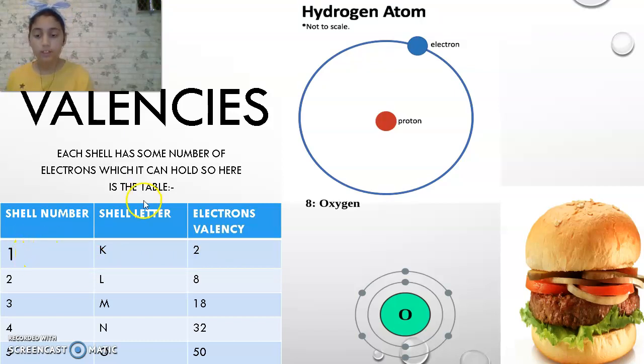Shell number one, shell letter K, electron valency is two. Shell number two, shell letter L, electron valency is eight. Shell number three, shell letter M, electron valency is eighteen.